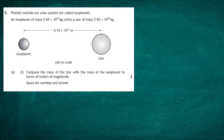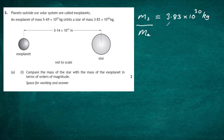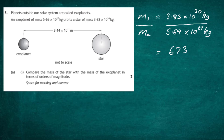For two marks in part a(i) we're asked to compare the mass of the star with the mass of the exoplanet in terms of orders of magnitude. When comparing, we take a ratio. The mass of the star is 3.83 times 10 to the power 30 kilograms, divided by the mass of the exoplanet, 5.69 times 10 to the power 27 kilograms. Dividing gives an answer of 673 — meaning the star is 673 times more massive than the exoplanet.